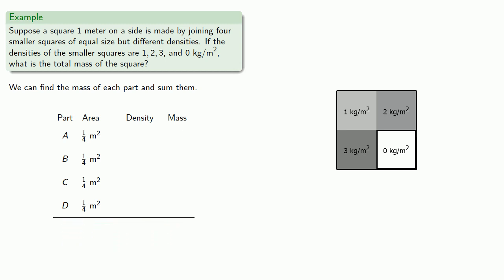The densities are given as 0, 1, 2, and 3, and importantly we'll keep those units kilograms per square meter. Remember, units act like algebraic variables. So if we multiply the area by the density, our units will be kilograms, which is a unit of mass.